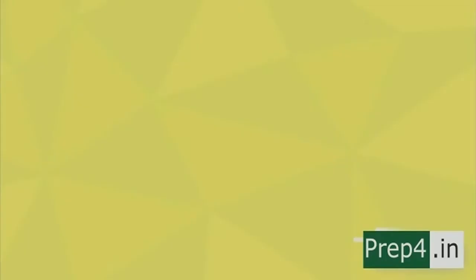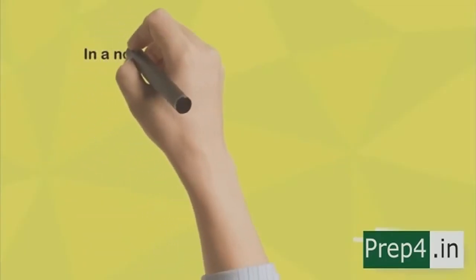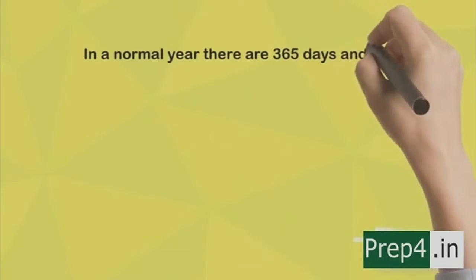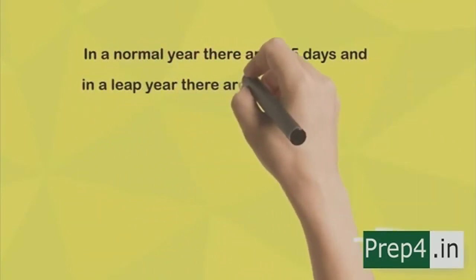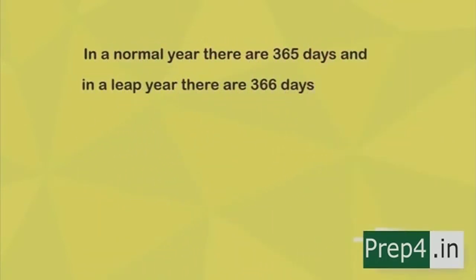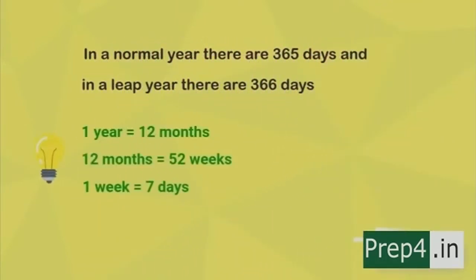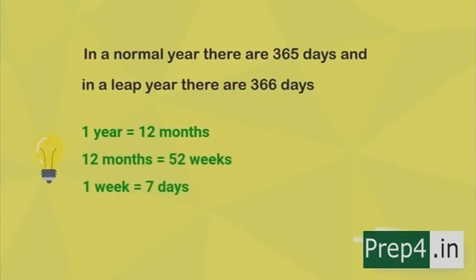In a normal year there are 365 days, and in a leap year there are 366 days. As we all know, one year has 12 months. Those 12 months include 52 weeks, and one week has seven days. This is the basic structure of a year.